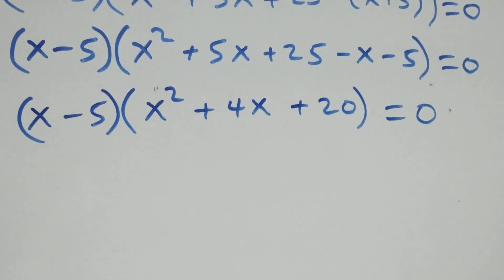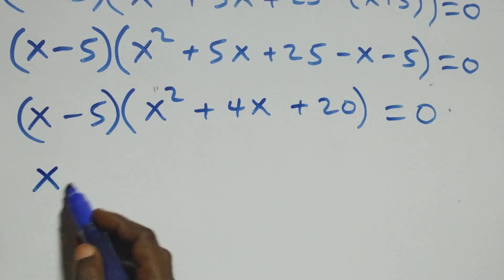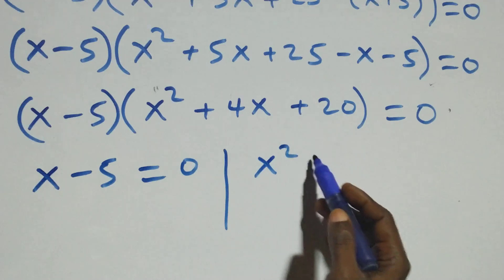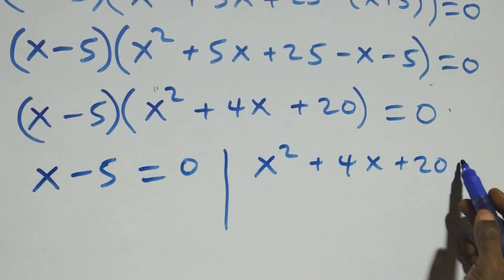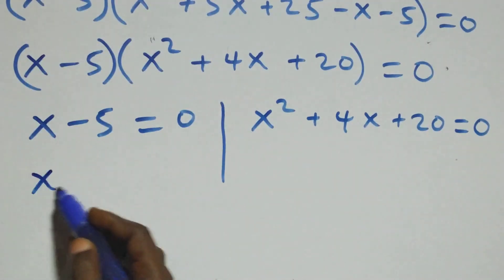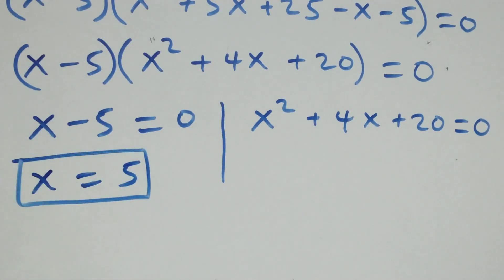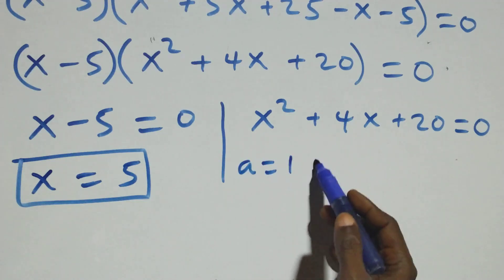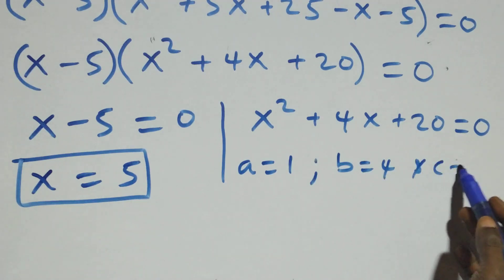We now have two possible cases. First, x minus 5 equals 0, giving x equals 5 as a real solution. Second, we have the quadratic x square plus 4x plus 20 equals 0, where a equals 1, b equals 4, and c equals 20.